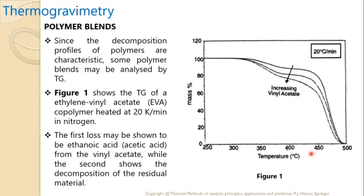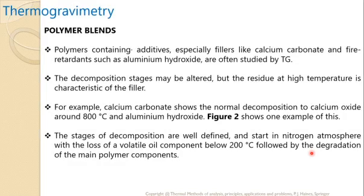The first mass loss corresponds to ethanoic acid (acetic acid) present in the sample from the vinyl acetate component. The second stage shows the decomposition of the residual material. Polymers containing additives, especially fillers like calcium carbonate and pyretins such as aluminum hydroxide, are often studied by TGA. The decomposition stages may be altered, but the residue at higher temperature is characteristic of the filler. For example, calcium carbonate shows normal decomposition to calcium oxide around 800°C. Figure 2 shows one example of this.